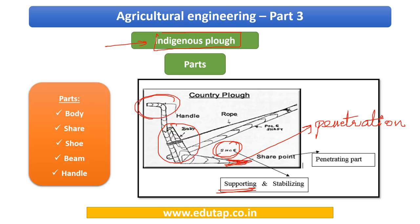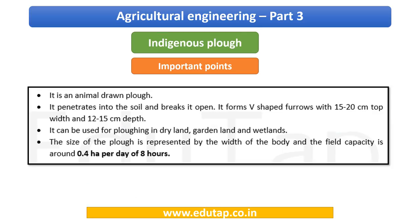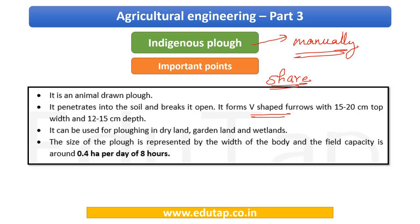The indigenous plow can be animal-drawn or manually operated. The share creates V-shaped furrows, with a depth of 12 to 15 centimeters. The field capacity is around 0.4 hectares per day of eight hours — eight hours accounting for the maximum time a person can invest on the field. Kindly make note of these important data points.